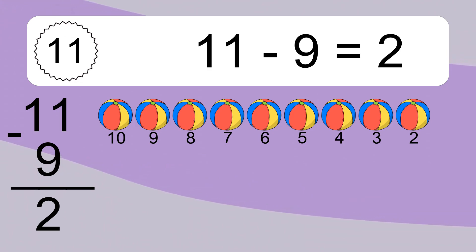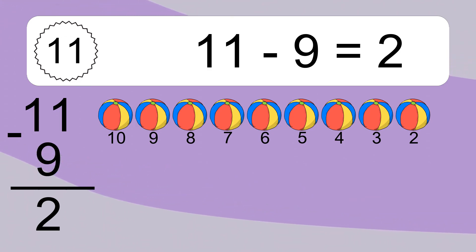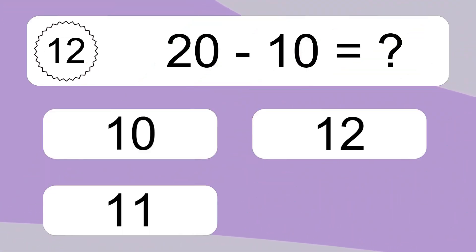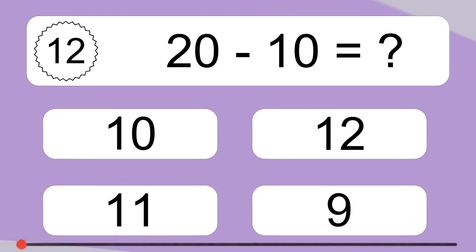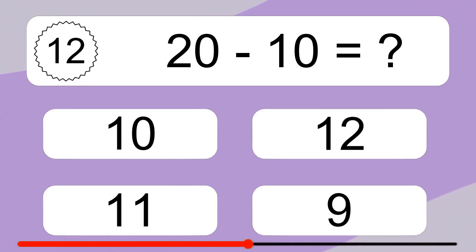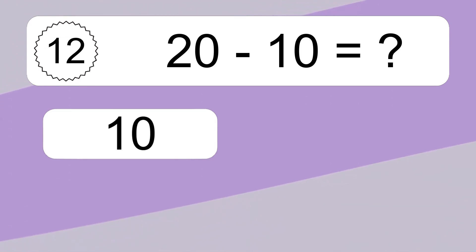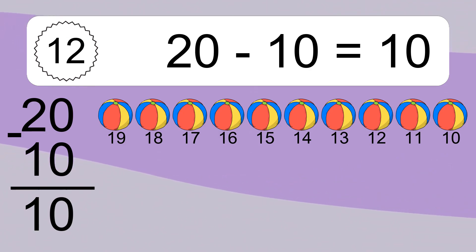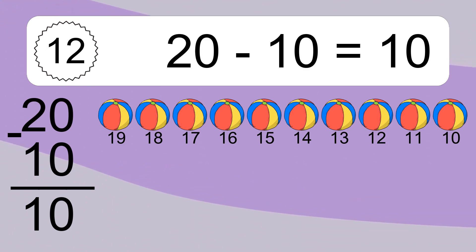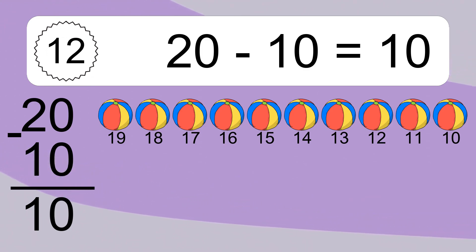7, 6, 5, 4, 3, 2. 20 minus 10 equals what? 20 minus 10 equals 10. Let's count it. 19, 18, 17, 16, 15, 14, 13, 12, 11, 10.